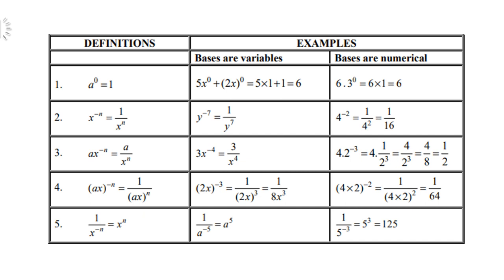Definition 5: 1 over x to the power negative n — to make the exponent positive, x goes up to the numerator, becoming x to the power n. For example, 1 over ax to the power negative 5 is ax to the power positive 5. And 1 over 5 to the power negative 3 is 5 to the power 3, which equals 125.